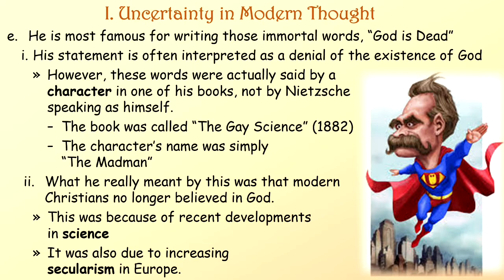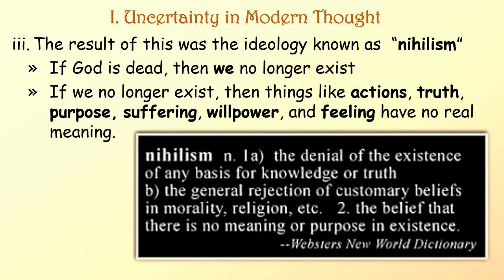His statement is often interpreted as a denial of the existence of God. However, these words were actually said by a character in one of his books, not by Nietzsche speaking as himself. The book was called The Gay Science from 1882, and the character's name was simply The Madman. What Nietzsche really meant was that modern Christians no longer believed in God, because of recent developments in science and increasing secularism in Europe. The result of all this was the ideology known as nihilism.